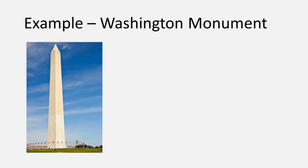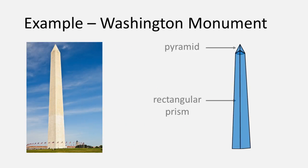Monuments can also be great examples of composite shapes. The Washington Monument is an example of a shape called an obelisk. Can you identify the shapes that make up this monument? If you guessed a pyramid and a rectangular prism, you are correct.